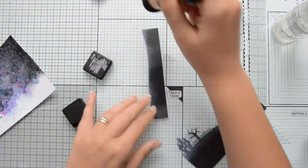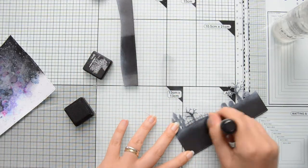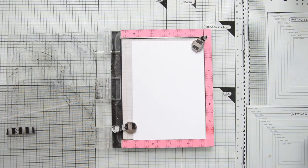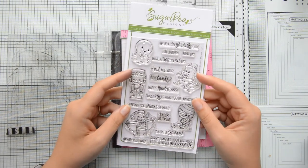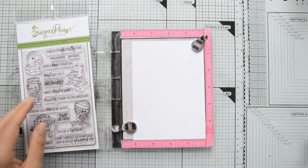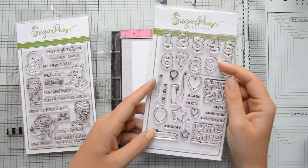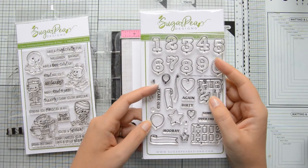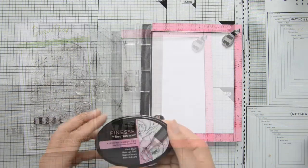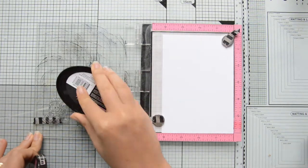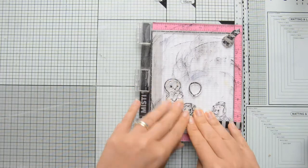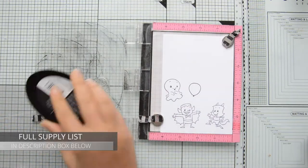Then I moved on and started working on my images. The stamp sets that I'll be using today are the Monster Mash stamp set, which is absolutely adorable, and I paired it with the Balloon Numbers stamp set. This is really versatile for any type of birthday and celebration card. Later on I will also add one image from the Bewitched stamp set, also by Sugar Pea Designs.